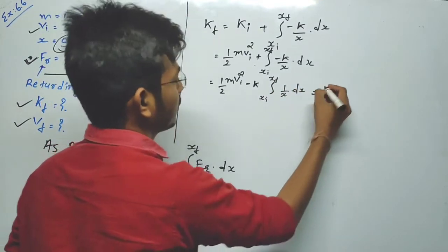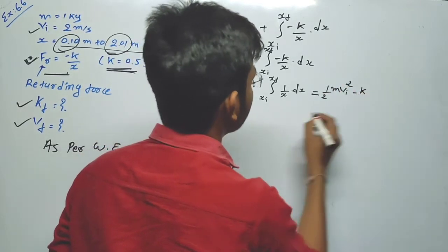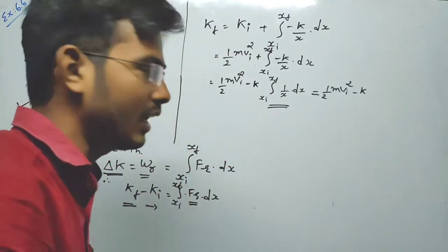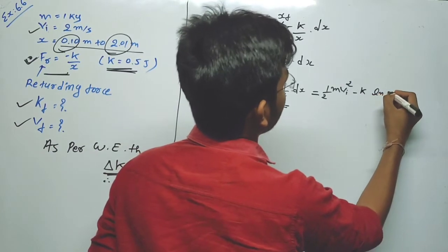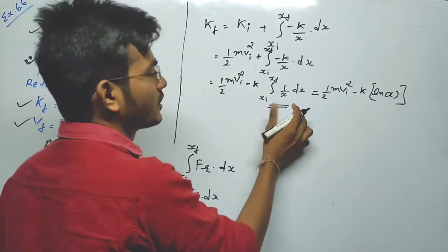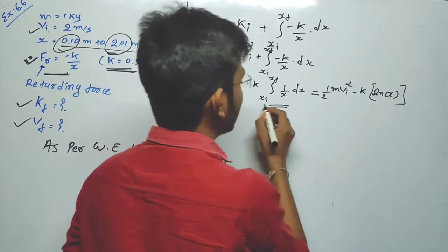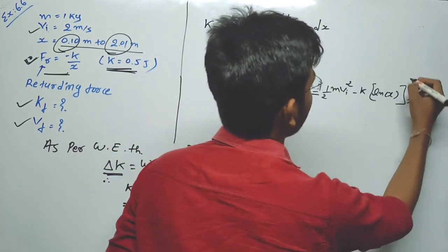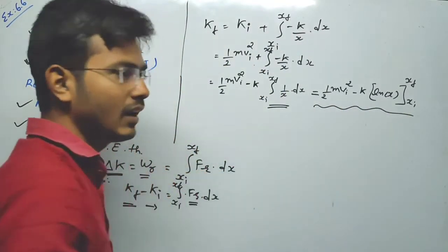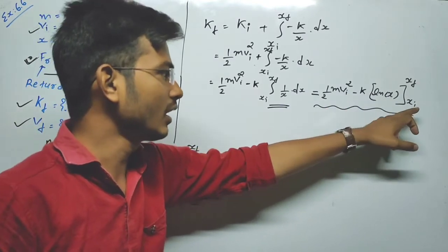The integration of 1/x dx gives ln x. So we write: K_f = (1/2)mv_i² - k [ln x] evaluated from x_i to x_f. Now we have to put in all the values. We know m, v_i, k, x_i, and x_f.